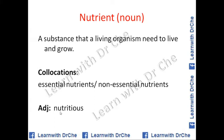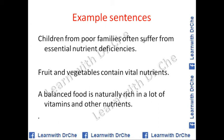The adjective form is 'nutritious' — something that is nutritious. Keep both words in mind: use 'nutrient' in one place and 'nutritious' in another to increase your vocabulary range and achieve a higher score. Example sentences: 'Children from poor families often suffer from essential nutrient deficiencies.' 'Fruit and vegetables contain vital nutrients.' Remember, the plural of fruit is fruit, without an S. 'A balanced diet is naturally rich in vitamins and other nutrients.'